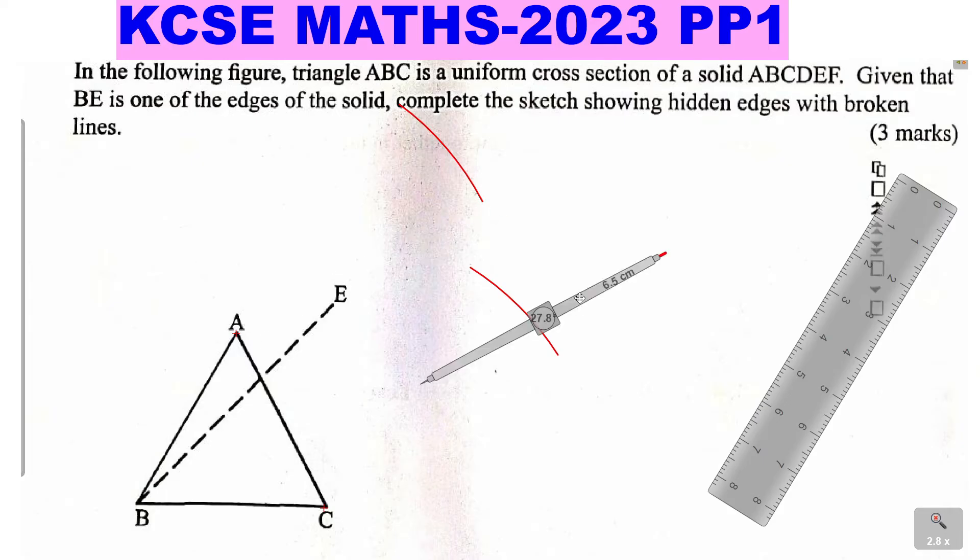Then from there, you'll need BC. You can see you need this measurement here from E, the side opposite. So we take measurement BC. That is measurement BC. With that measurement, you stand at E and cut that arc that you made. Cut that arc.